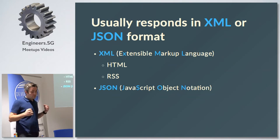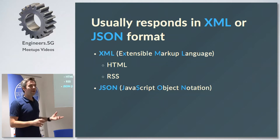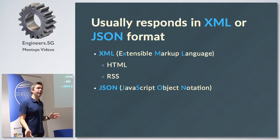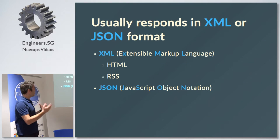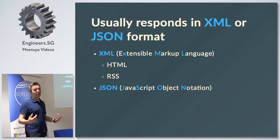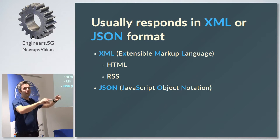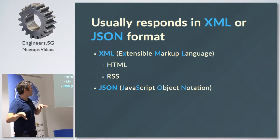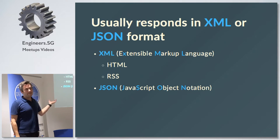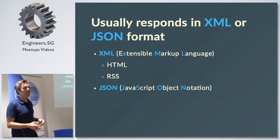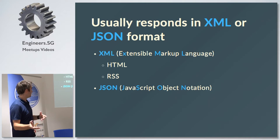REST APIs will usually respond in JSON or XML. XML was more common a few years ago — it's Extensible Markup Language, and it's what HTML is based on. If you've ever written HTML, HTML is a type of XML using those angle brackets where you open and close elements. RSS is another big protocol that uses XML and for a long time was the de facto way everyone did things.